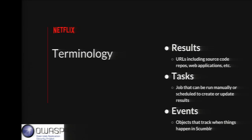Tasks can update results by adding more metadata — context for understanding what an asset is and how it's used. Security tasks can also put vulnerabilities or security issues found against these assets right in the metadata, so you can action, see, and prioritize them. Events are objects that track when something has happened in Scumblr — originally designed as an audit log so we could tell when someone makes a change to a result or tries to action a vulnerability.